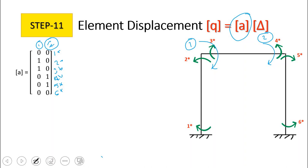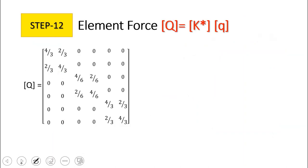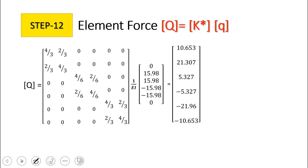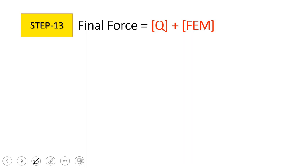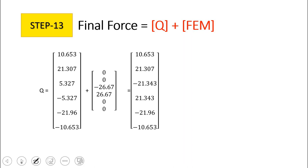Multiplying the displacement transformation matrix for the entire structure by the displacement matrix gives the element displacements. Step 12 is to find the element forces by multiplying the element stiffness matrix of the entire structure by the element displacement vector. The final forces or final moments are obtained by adding the element forces from step 12 and the fixed end moments.